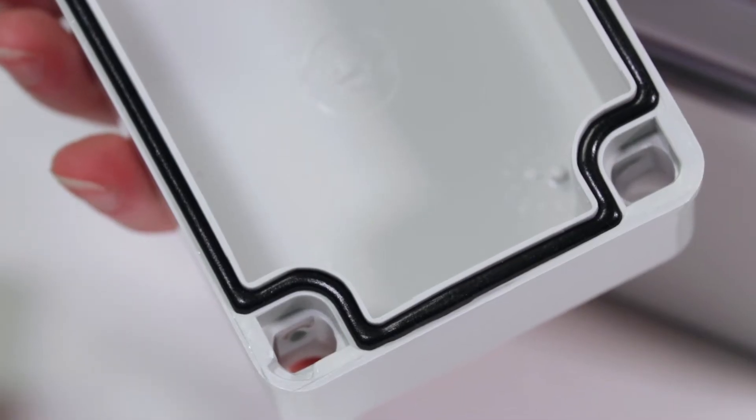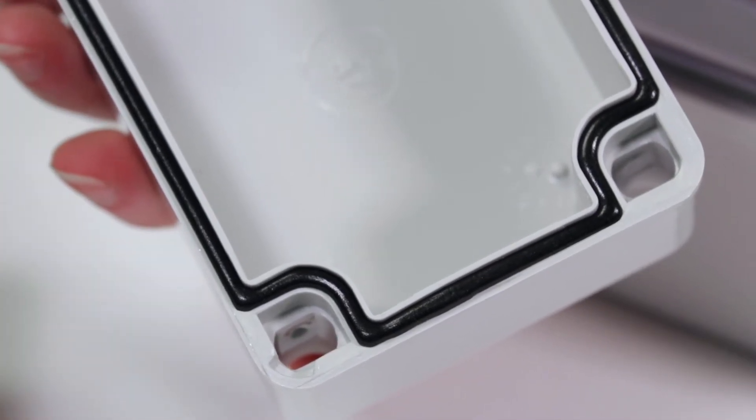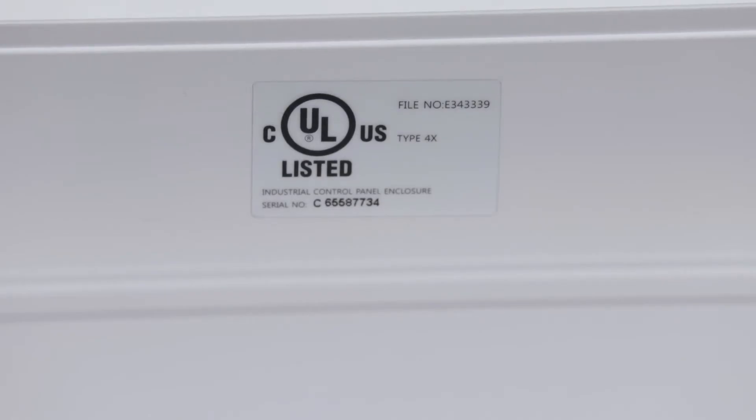Featuring a continuously poured foam gasket for reliable protection, the PTK series includes non-metallic cover screws. Also, it is flame retardant with a UL94-5VA rating.